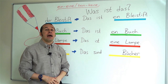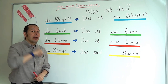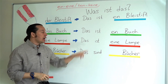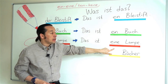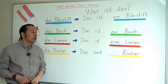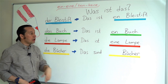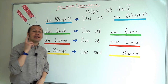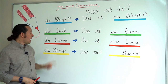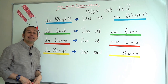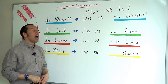For die Lampe, be careful: because the article is 'die', I cannot say 'ein' — I must say 'eine'. So: Das ist eine Lampe — this is a lamp. For the specific lamp, I say: Das ist die Lampe — this is the lamp. But for 'a lamp': Das ist eine Lampe.